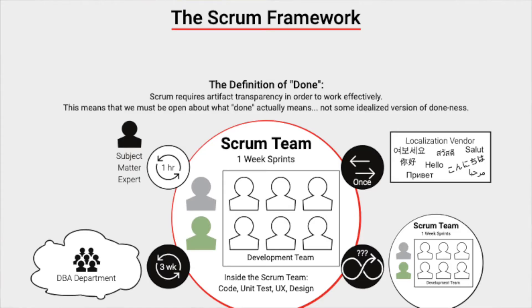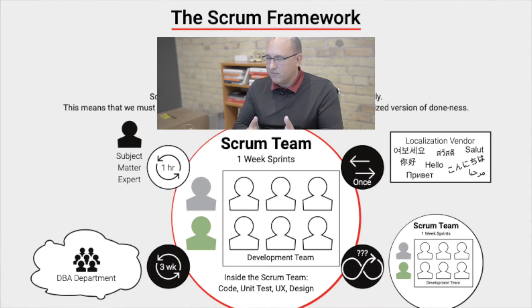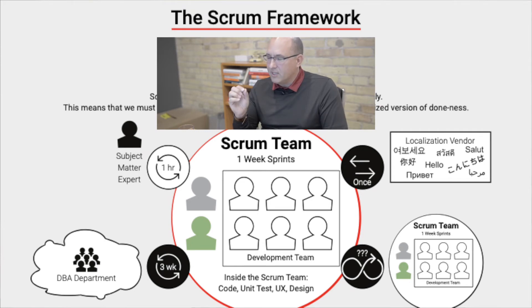Many organizations doing Scrum have multiple Scrum teams working on the same system or product, and there are dependencies between them. A very common one is between different components or layers in a software product. Your Scrum team might be doing one-week sprints on the front end, then submit a request to a back-end Scrum team to get some work done. That request goes onto a product backlog, and there's no service level agreement or commitment for that other team to complete the work within a specific amount of time.